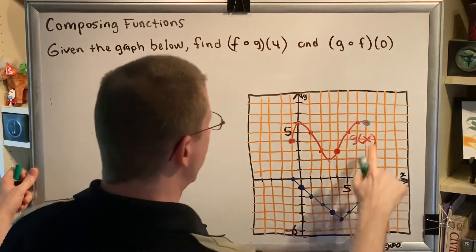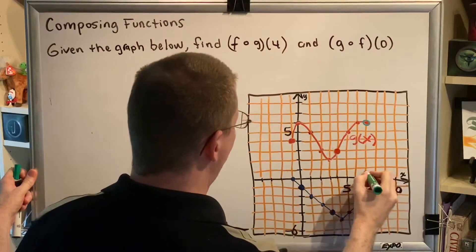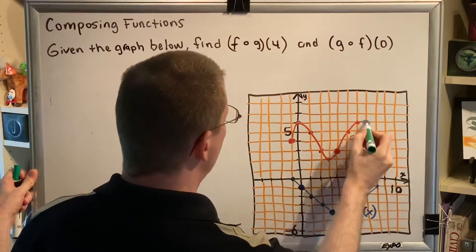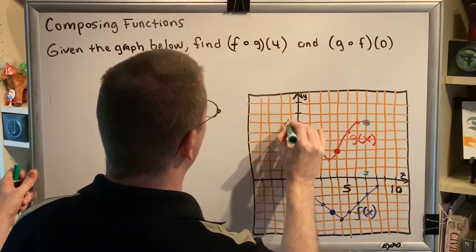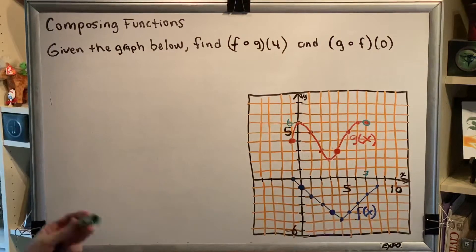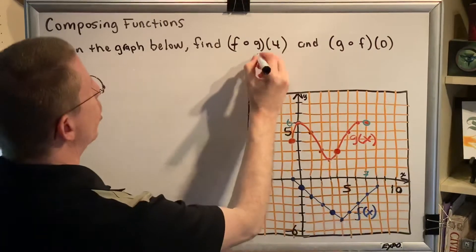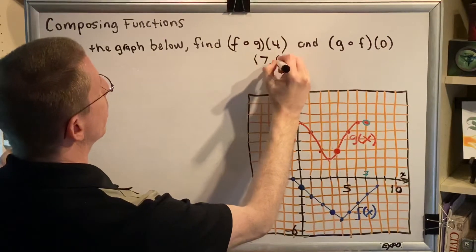This point has an x-coordinate of 7 and it has a y-coordinate of 6. So if I were to write that as an ordered pair, that would be the ordered pair 7, 6.